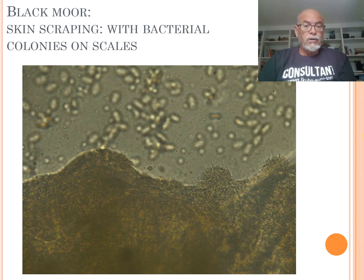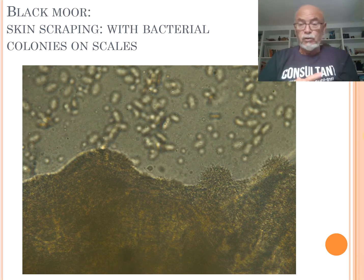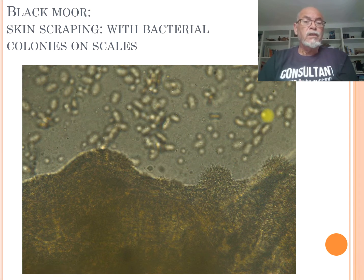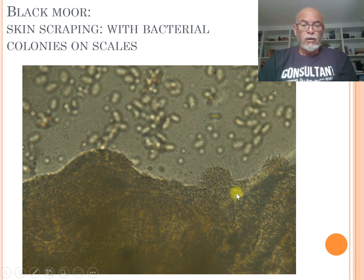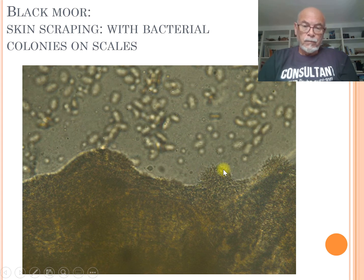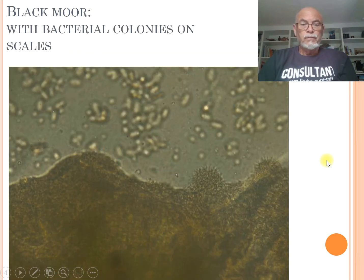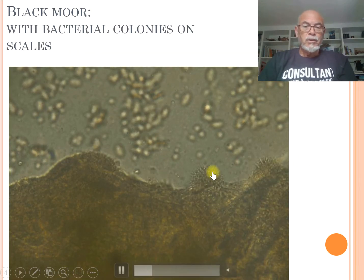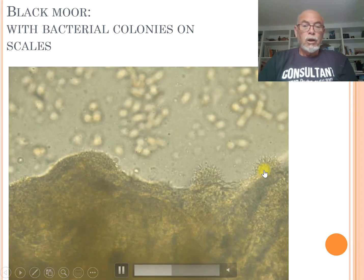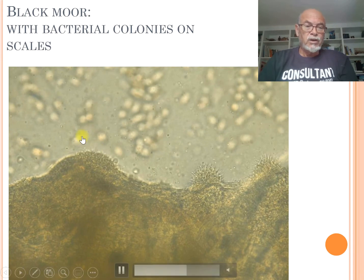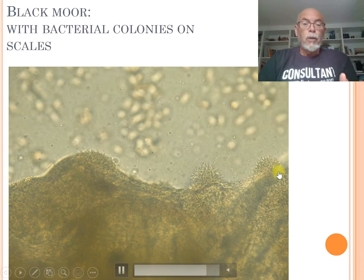What you should do is take a skin scraping. That skin scraping can help you determine what you can see, particularly with columnaris. In those microscopic observations, you can identify the bacteria due to its formation of colonies — these groups at the edges of the scale of the fish. Here is a group of bacteria. You can see very clearly, they form tubifex-like colonies. Here we see the video — you can see the bacteria moving like tubifex. You can see them here too. All colonies of columnaris bacteria.